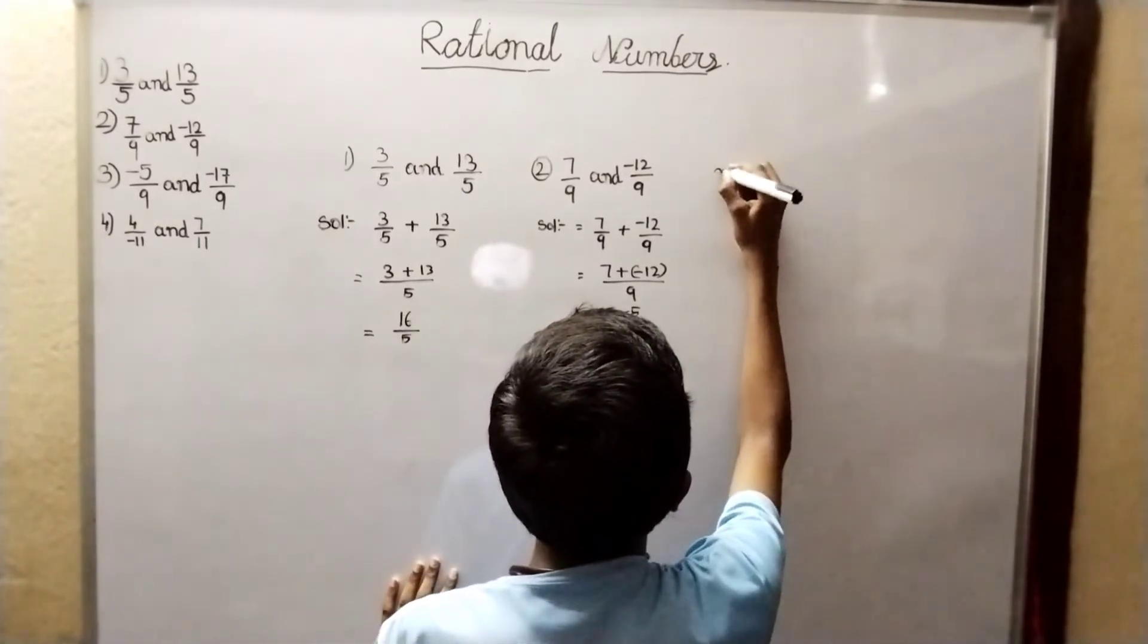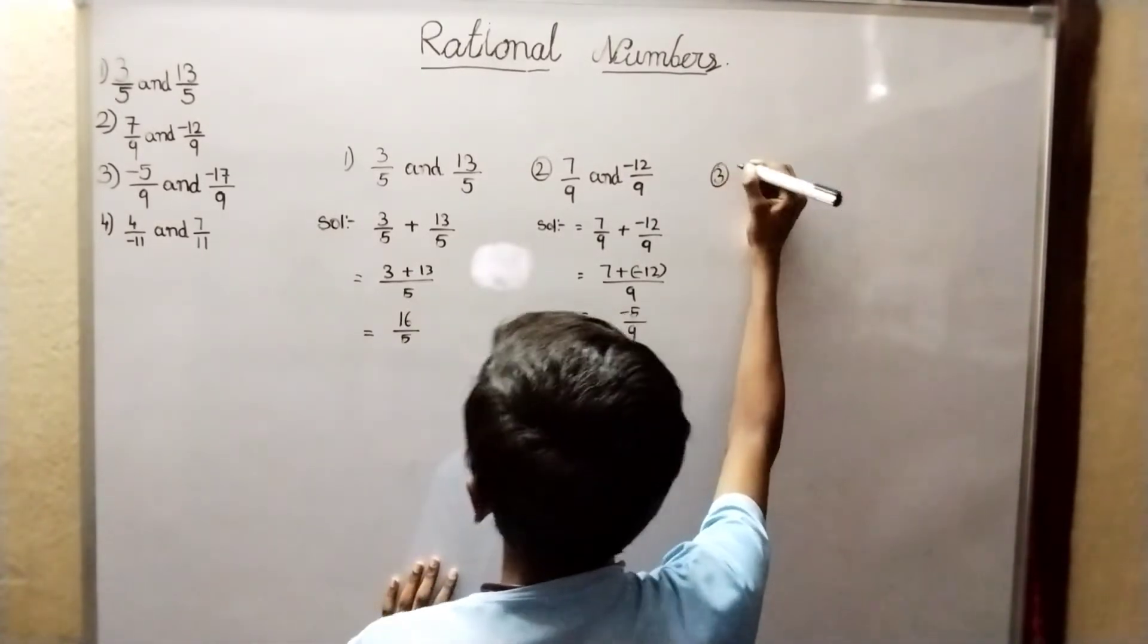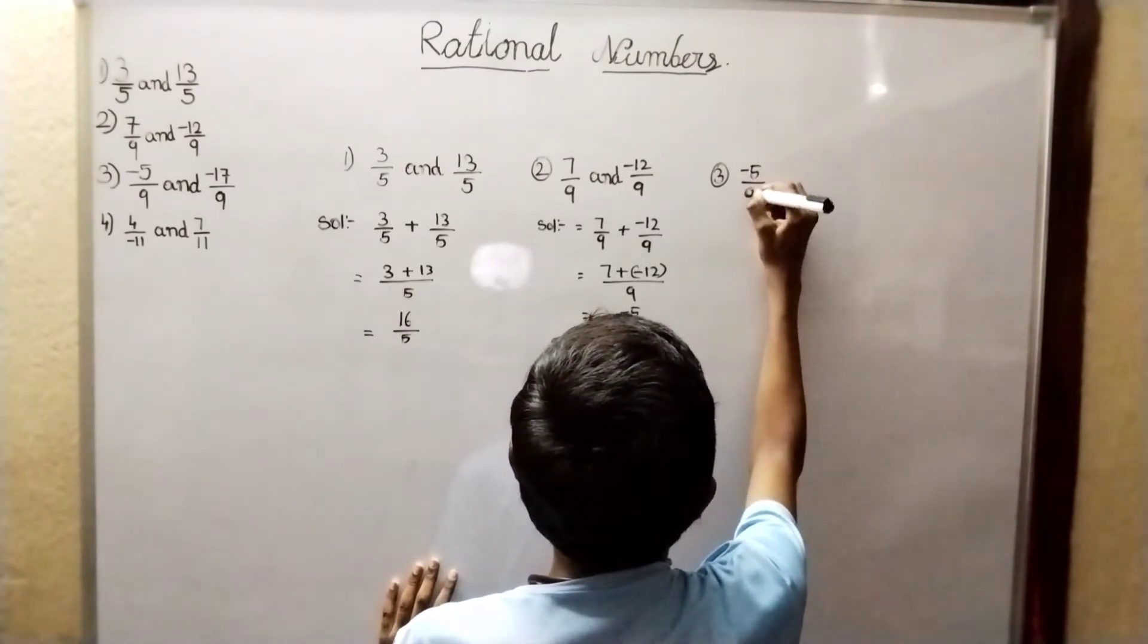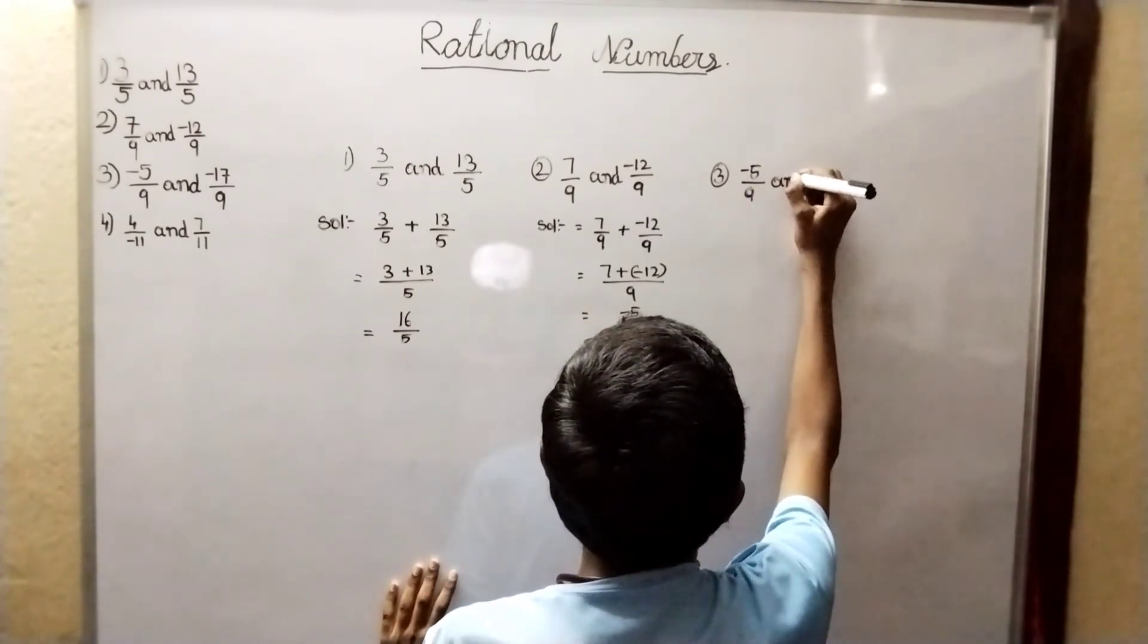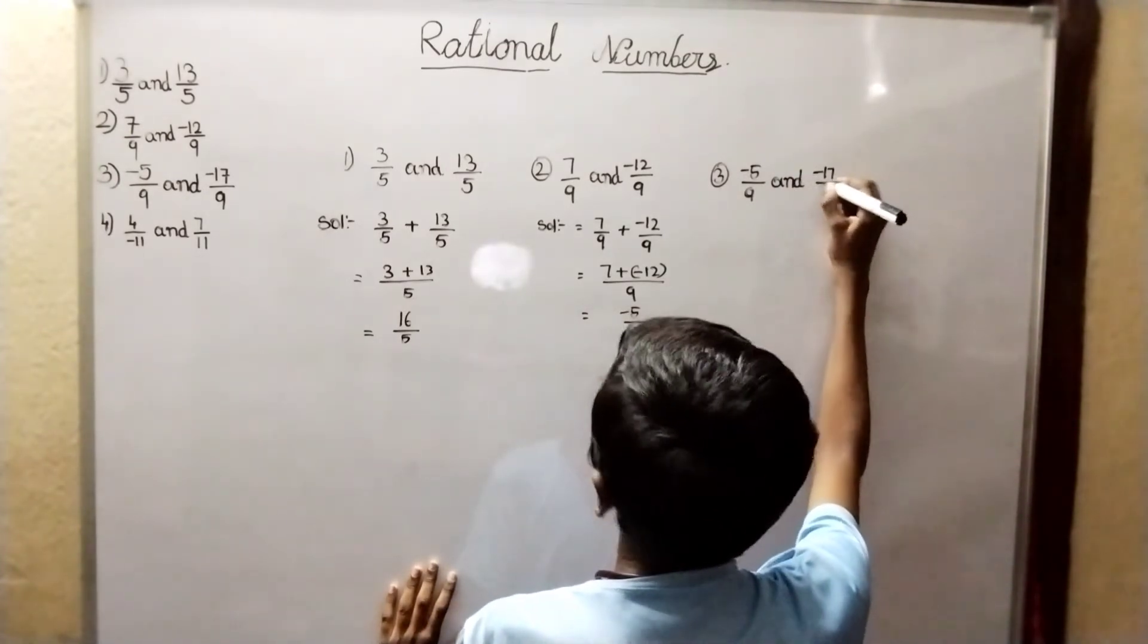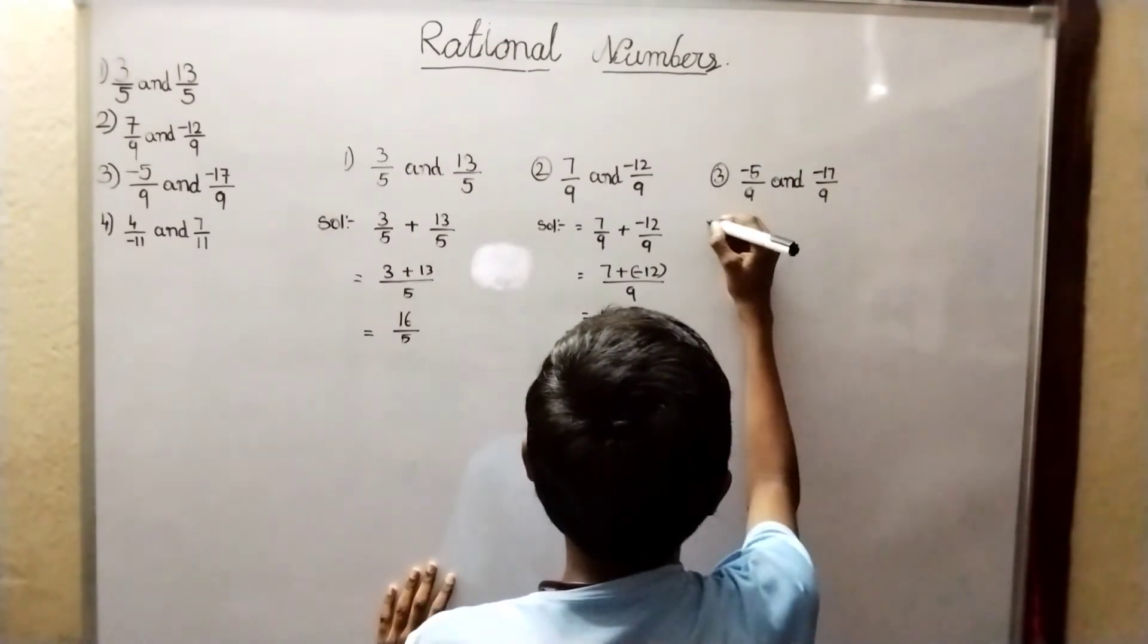Next sum: minus 5 by 9 and minus 17 by 9. Solution.